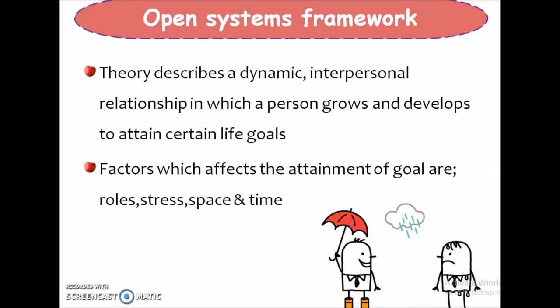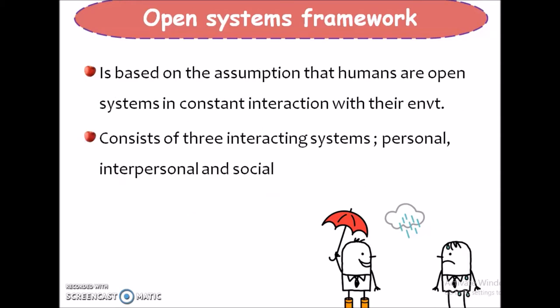Coming to the model, she developed an open system framework for her theory. The theory describes a dynamic interpersonal relationship in which a person grows and develops to attain certain life goals. There are some factors which affect attainment: role, stress, space and time. This open system is based on the assumption that humans are open systems in constant interaction with their environment.